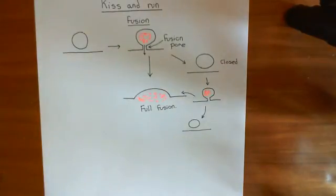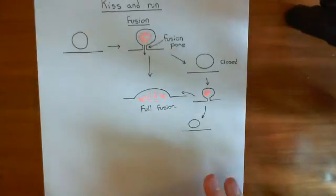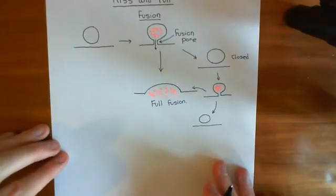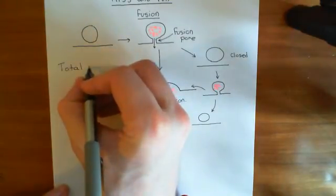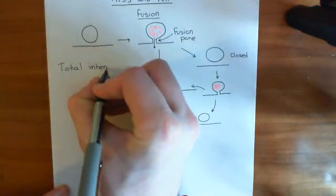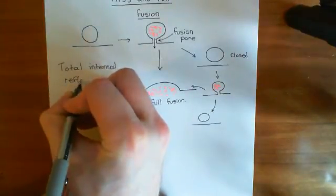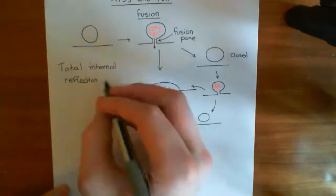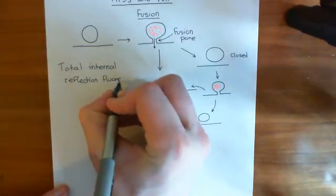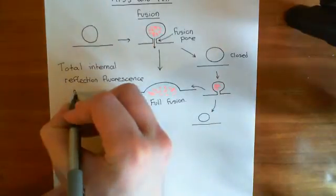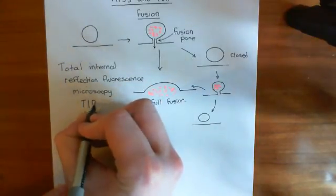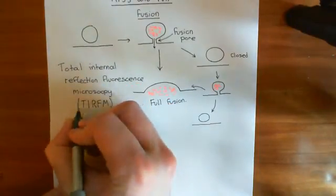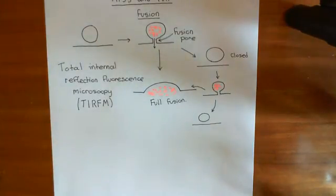What sort of evidence do we have for this? We can actually see this happening using a technique known as total internal reflection fluorescence microscopy, which I will explain. It's often abbreviated to TIRF, or TIRF-M in full — people just refer to it as TIRF because it's a cooler acronym.